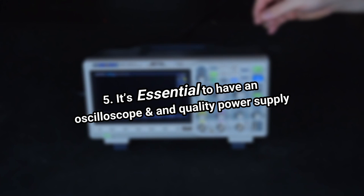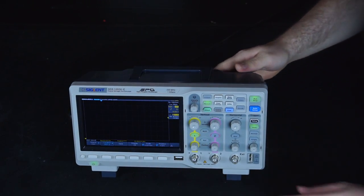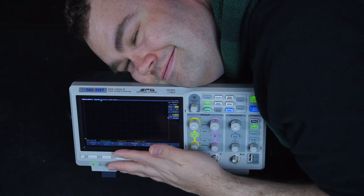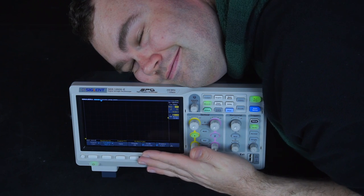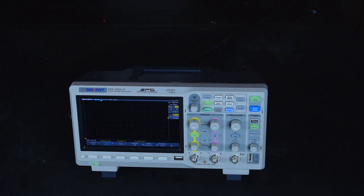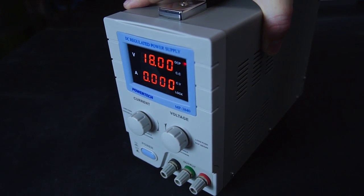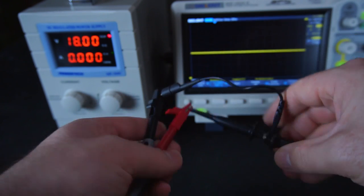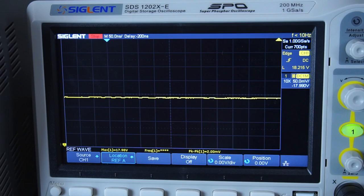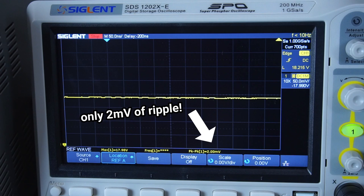Tip 5: It's essential to have an oscilloscope and quality power supply. An essential piece of hardware for troubleshooting buck converter circuits is the oscilloscope. A digital multimeter just won't cut it here. You'll also need a power supply that has minimal noise on its output. Otherwise you'll be injecting extra noise into your buck converter circuit making it very difficult to determine where the noise is coming from.